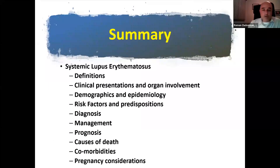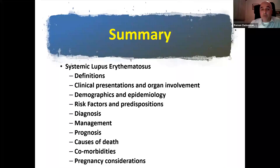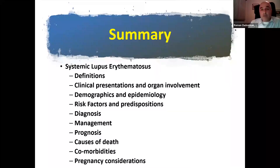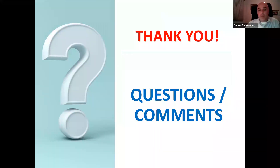This summary slide covers what we talked about today: the definition of systemic lupus, clinical manifestations, organ involvement, demographics, epidemiology, risk factors, predispositions, how we make the diagnosis, how we manage patients, prognosis, causes of death, comorbidities, and various pregnancy considerations.